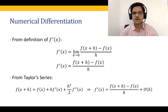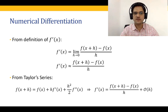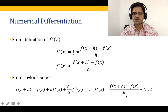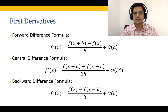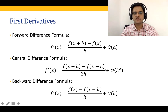In module 2 we covered the forward difference formula for f of x. The forward difference formula is: f-prime of x equals f(x+h) minus f(x), the whole thing divided by h. We saw that this method was order h to the power 1 accurate. The other formulae for first derivatives: the forward difference formula is f(x+h) minus f(x) divided by h, with accuracy of order h.